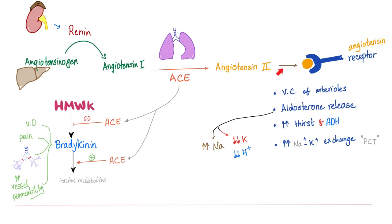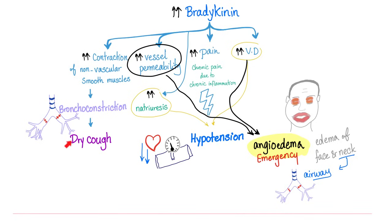Remember the renin-angiotensin-aldosterone system? Renin is released when beta-1 receptors are stimulated. Angiotensinogen becomes angiotensin I, and the ACE enzyme converts angiotensin I to angiotensin II, which makes you produce aldosterone and causes vasoconstriction. When you take an ACE inhibitor, ACE is gone — bradykinin runs amok causing vasodilation, pain, bronchoconstriction, and increased vessel permeability. That's why with ACE inhibitors you can suffer from dry cough and angioedema. Without aldosterone you get metabolic acidosis with hyperkalemia.